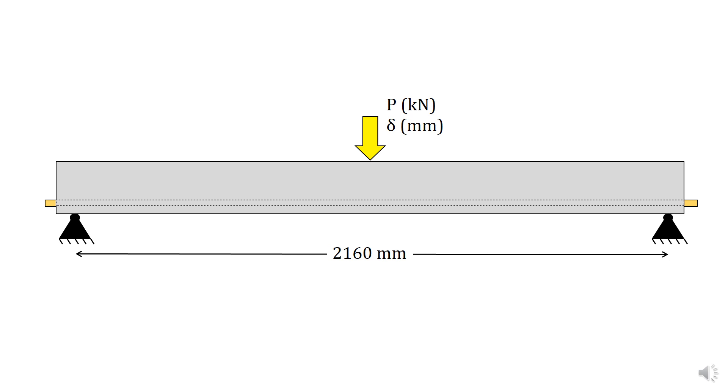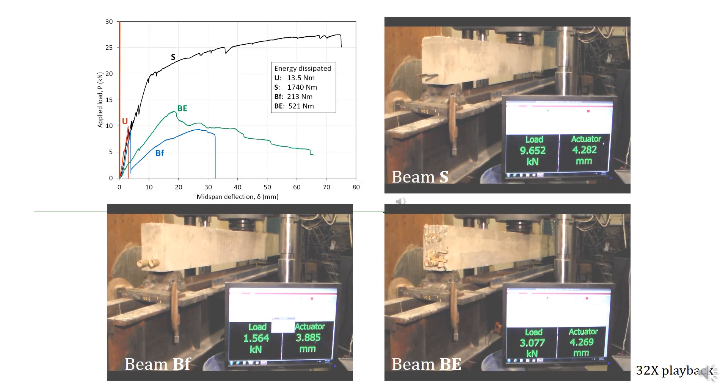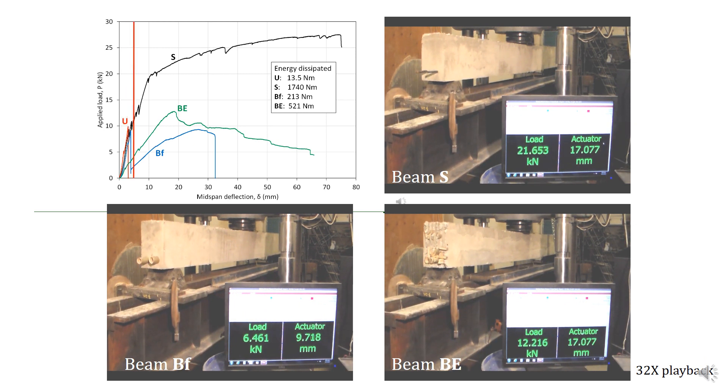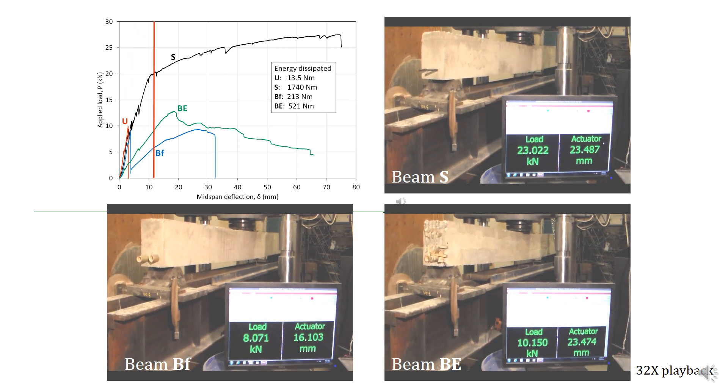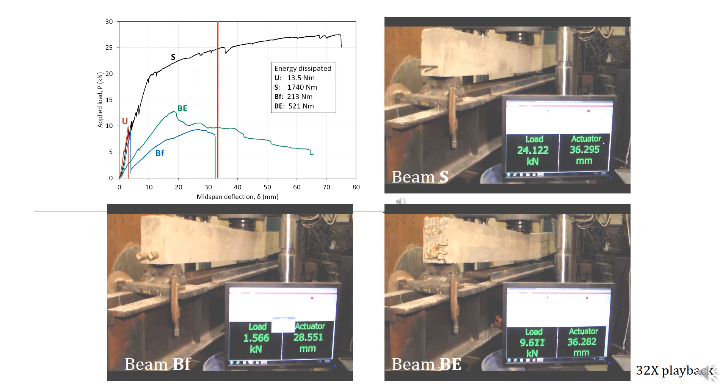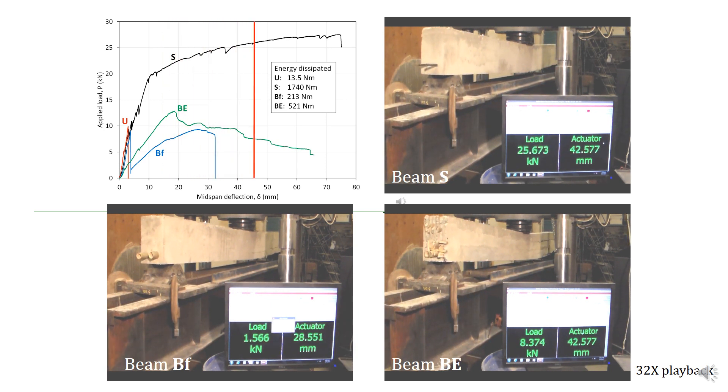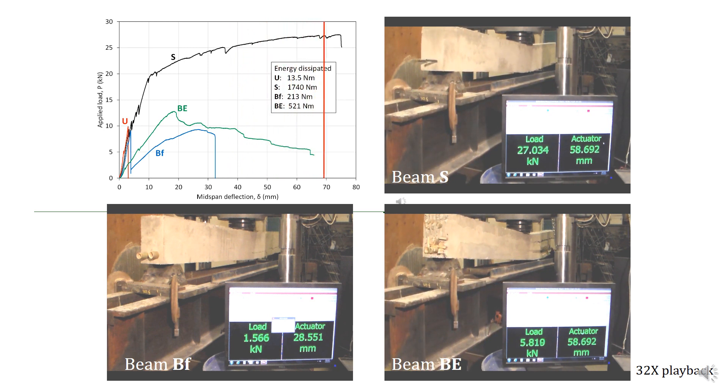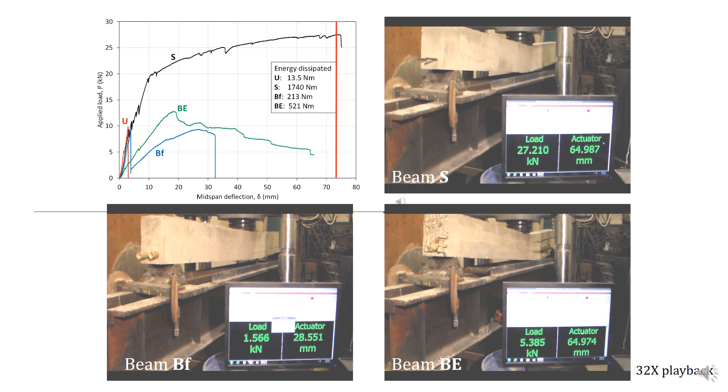Each beam is tested in simple flexure over a span of 2160 millimeters. The tests are shown here. Beam U is not shown—it's unreinforced, fails in a brittle manner very rapidly. The considerable ductility in evidence of beam S is very clear in the image on the upper right.